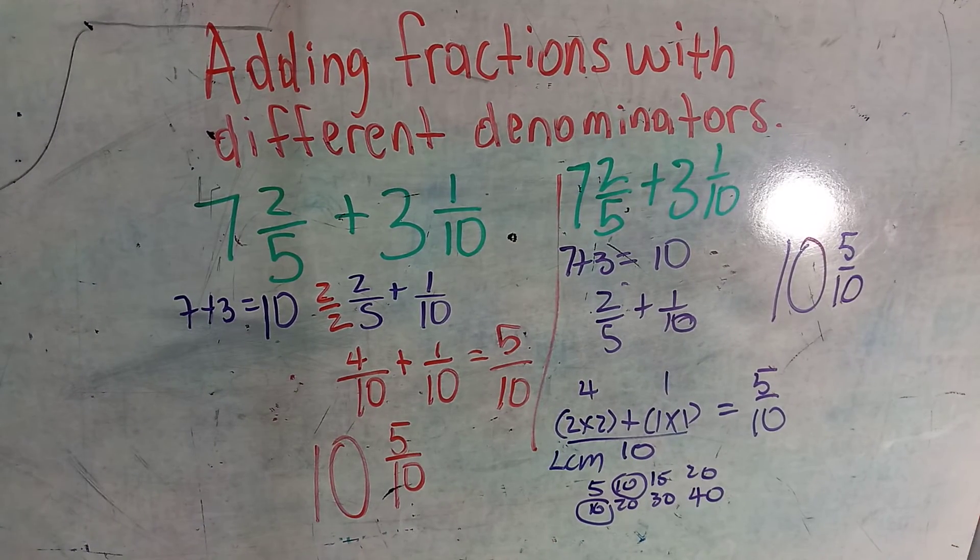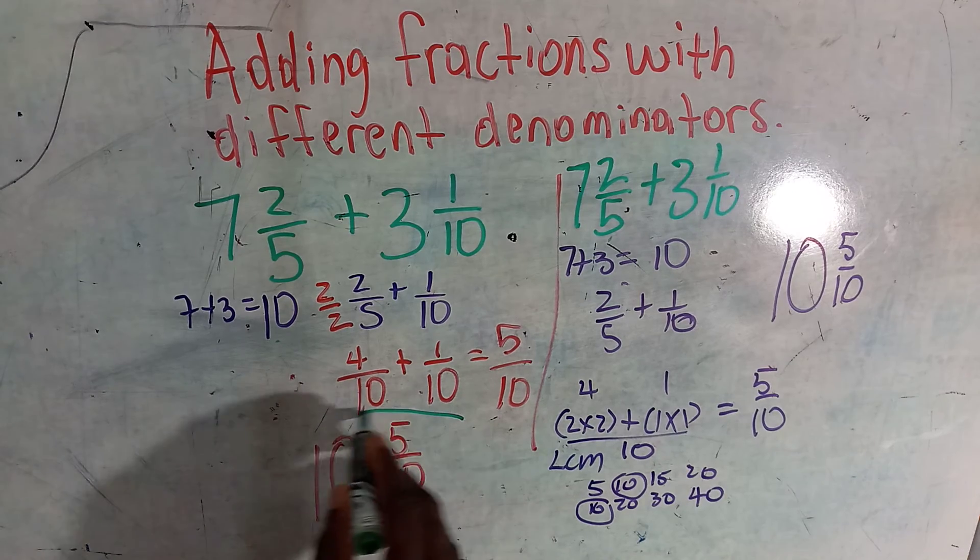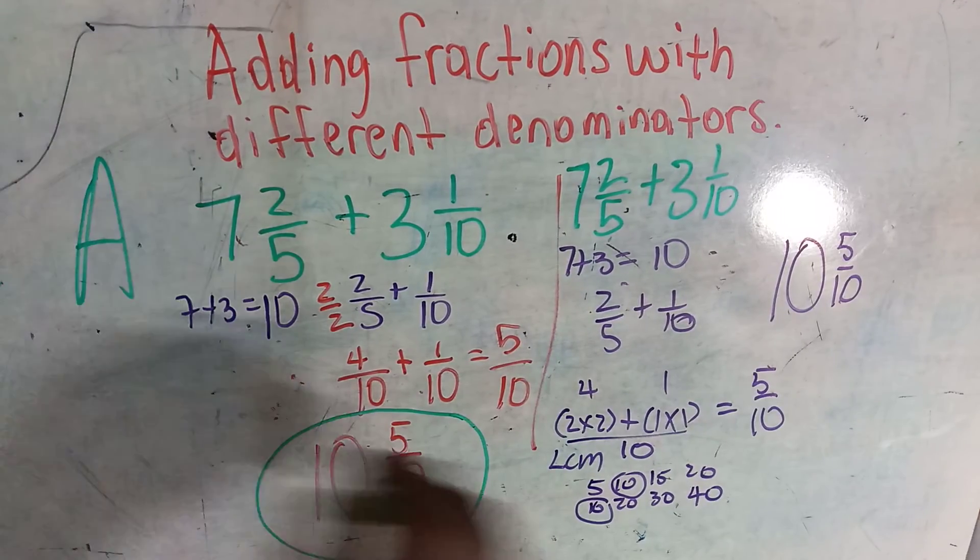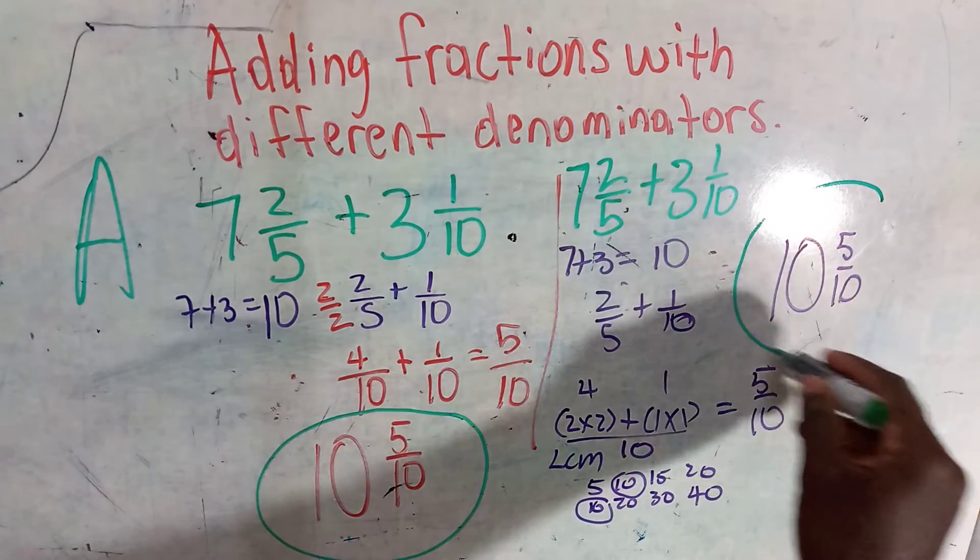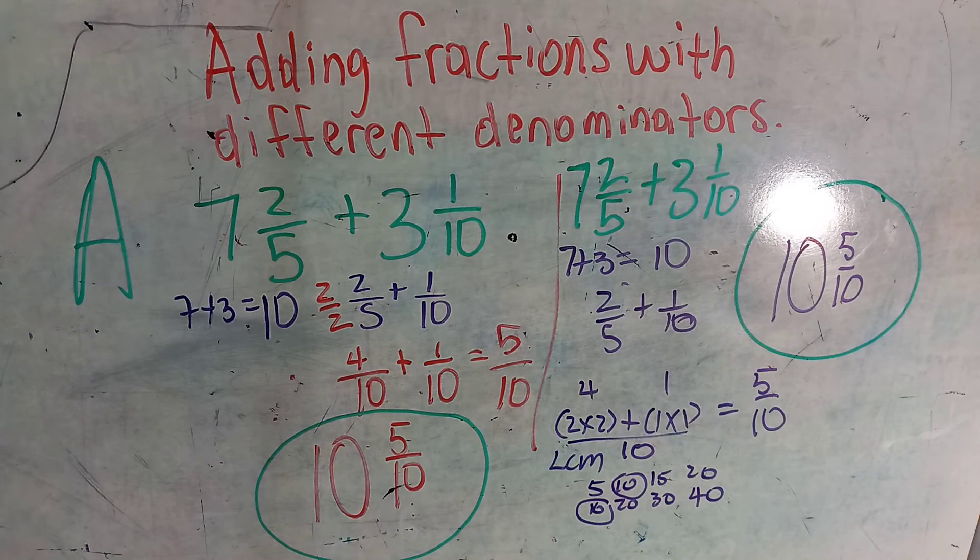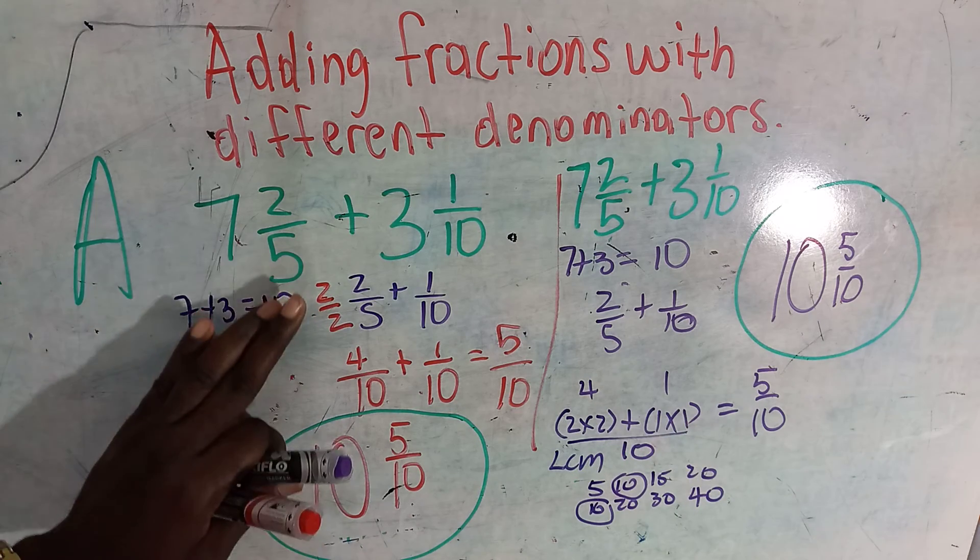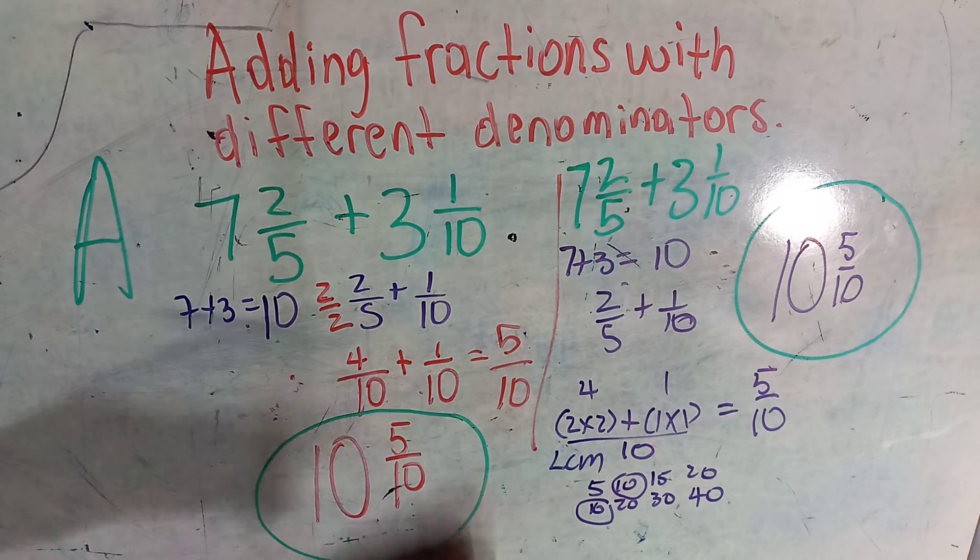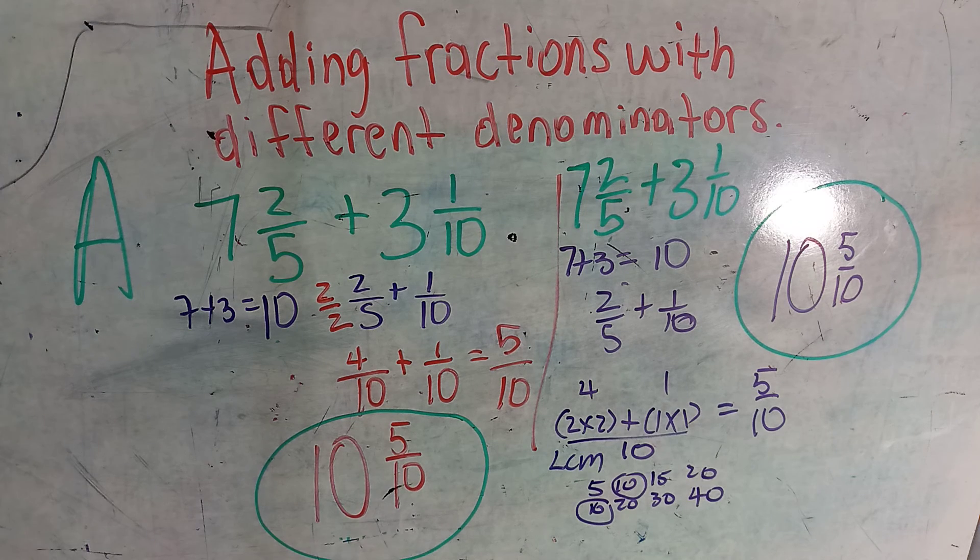If you notice, you get back the same answers. You get ten and five over ten in A, and in B you get ten and five over ten. Whichever way you want to do it, you can use the LCM or you can just change one of the fractions so that both denominators are the same in this particular case. It all depends on which option you want to use. You can use both if you want to practice.